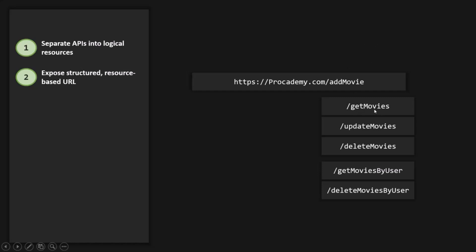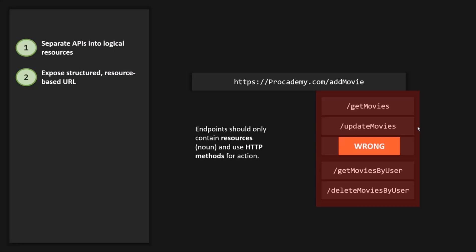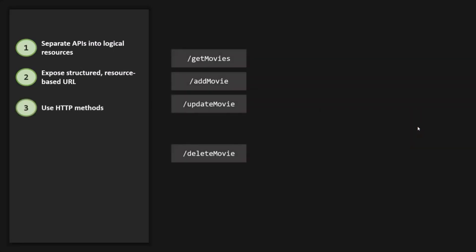For example, the 'get movies' endpoint will get all the movies and return them to the user. The 'update movies' endpoint will update a movie, and the 'delete movies' endpoint will delete a movie. However, there is something very wrong with these endpoints. Because as we learned in the first principle, endpoints should only contain a noun and not a verb. All these endpoints contain a verb — 'get movies,' 'update movies,' 'delete movies.' To perform different actions like reading, adding, updating, deleting, the API should use the right HTTP methods and not endpoints with a verb in them. Endpoints should only contain the resource, not the action that can be performed on them, because that will quickly become a nightmare to maintain.